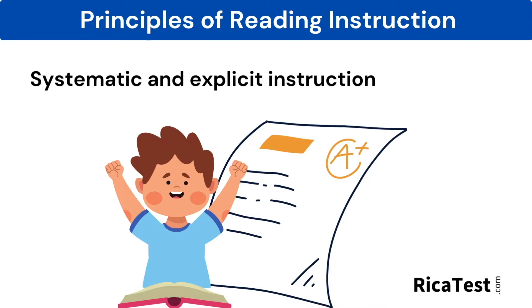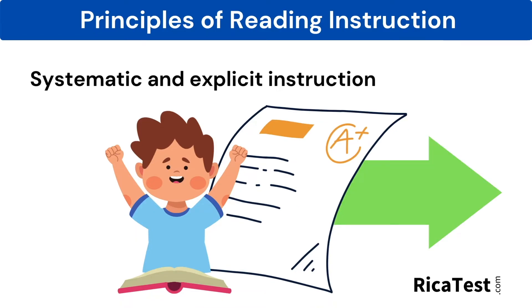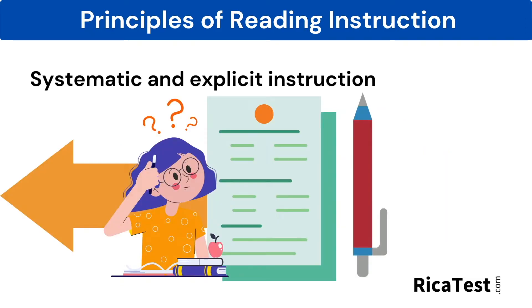Systematic means that if a child's assessment indicates he or she has mastered the skill being taught, the teacher will design the next instruction to build on and extend that student's knowledge and understanding of the topic. If, on the other hand, the student's assessment indicates that the student has not yet met the standard, the teacher will design the next lesson to support and reteach the skill for that student and other students whose assessment shows the same need.